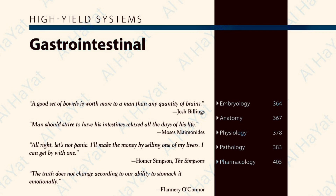Intestinal atresia presents with bilious vomiting and abdominal distension within the first one to two days of life. Duodenal atresia results from failure to recanalize. X-ray shows a double bubble sign — a dilated stomach with proximal duodenum. It is associated with Down syndrome, as shown in the abdominal x-ray picture.